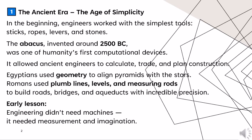The ancient era — the age of simplicity. In the beginning, engineering worked with the simplest tools: sticks, ropes, levers, and stones. The abacus, invented around 2500 BC, was one of humanity's first computational devices, allowing ancient engineers to calculate, trade, and plan construction. Egyptians used geometry to align pyramids with the stars; Romans used plumb lines, levels, and measuring tools to build roads, bridges, and aqueducts with incredible precision. The lesson: engineering didn't need machines — it needed measurement and imagination.